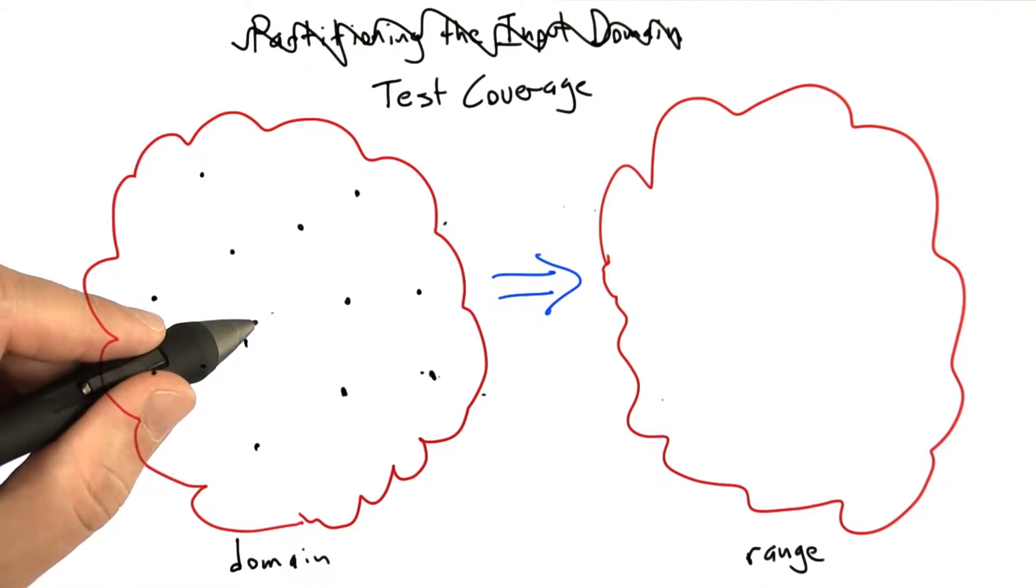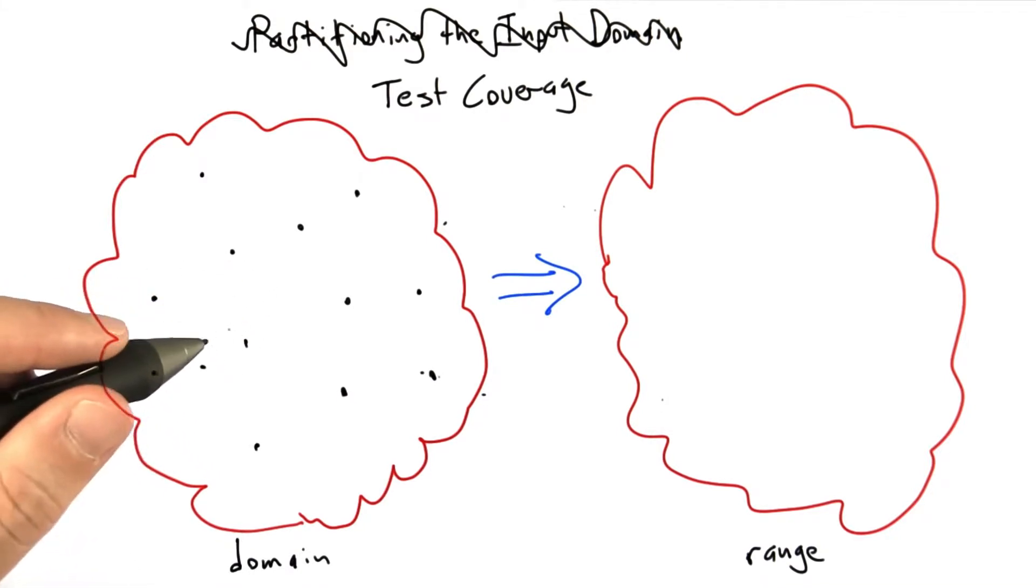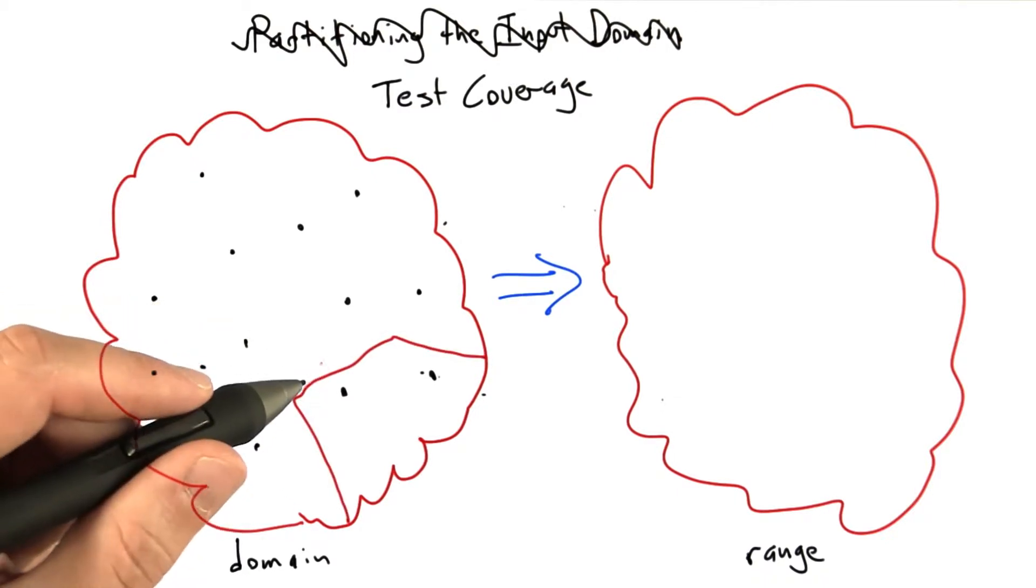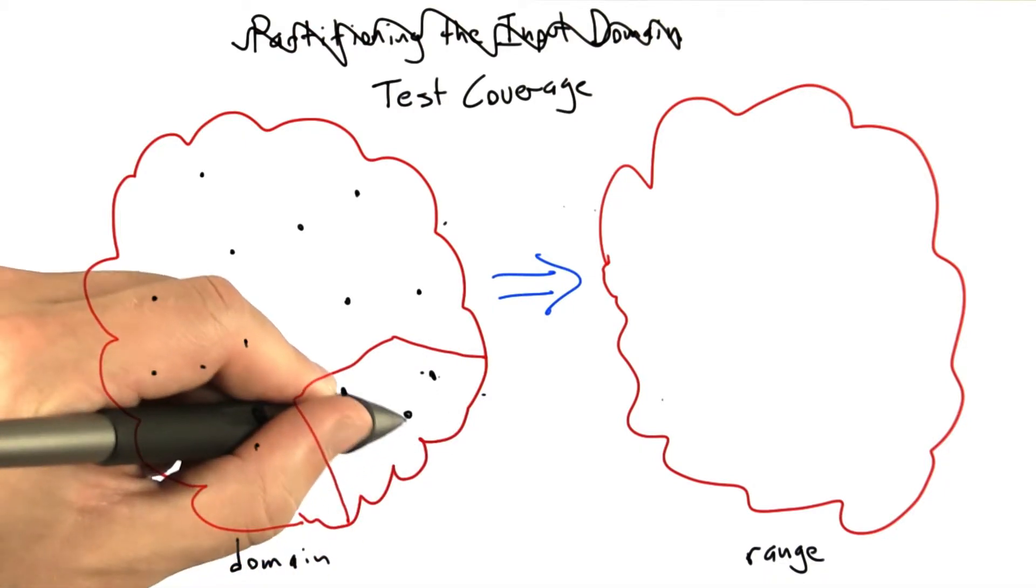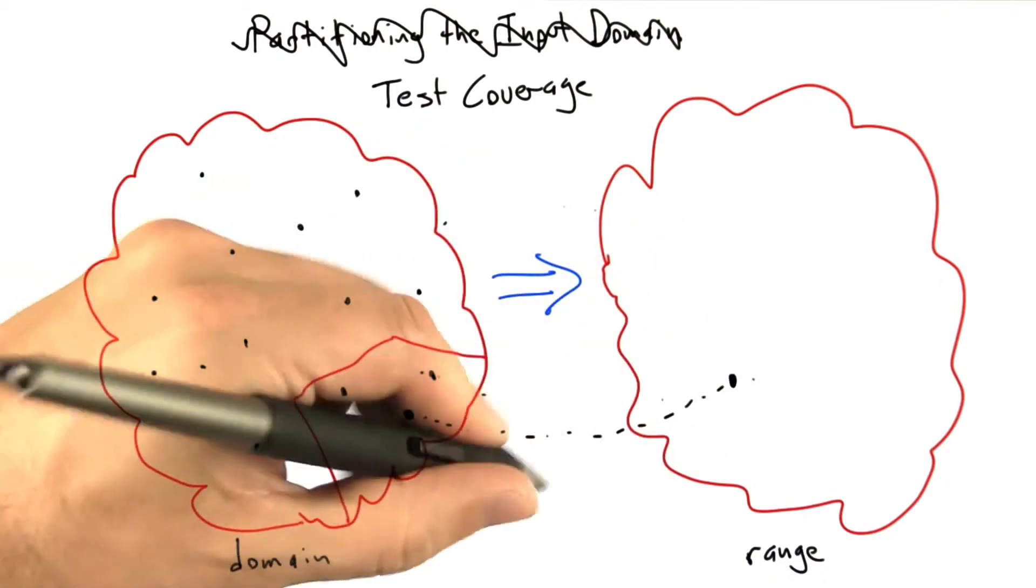So one particular kind of test coverage that we might aim for, and this is sort of an easy kind of test coverage, is called function coverage. Function coverage is achieved if we manage to test our system in such a way that every function in our source code gets executed during testing. We're going to be dividing our input domain into chunks where any test case in this part of the input space is going to result, for example, in a call to foo.